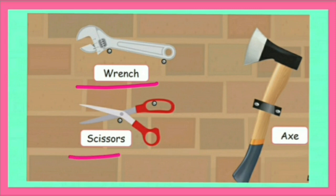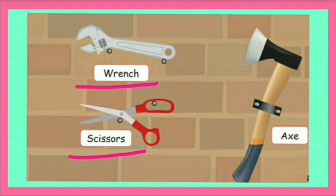Scissors. S-C-I-S-S-O-R-S. Kattarikol. Scissors is a tool for cutting things that consist of two long flat sharp pieces of metal that are joined together.